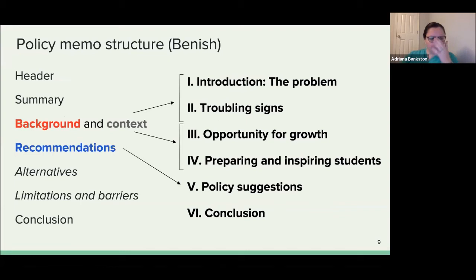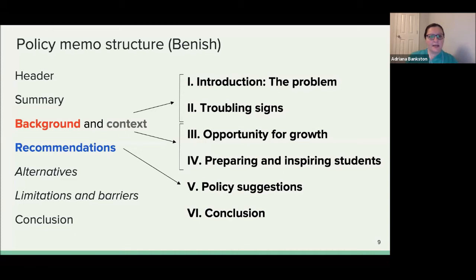In the real world, you would direct a memo to a specific person. Although JSPG isn't written that way, you would write specifically who it's from, who it's for — whether a specific representative or organization. Your memo would have a header, a summary at the top, then follow a structure of: what do we know, what do we recommend, what are the limitations, what are the barriers to that policy, and conclusions. The Banish paper does a really nice job of laying out these different sections — it starts with a problem, the issues, the context, opportunities for growth, recommendations, and then conclusions.